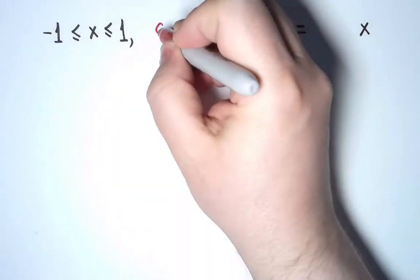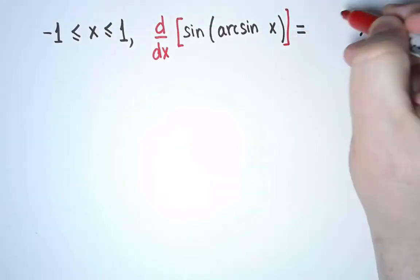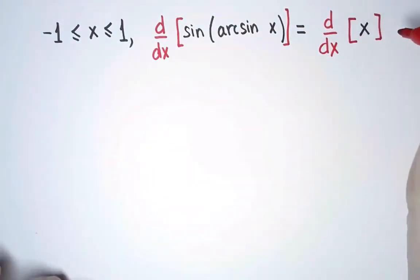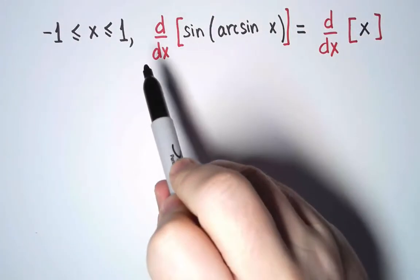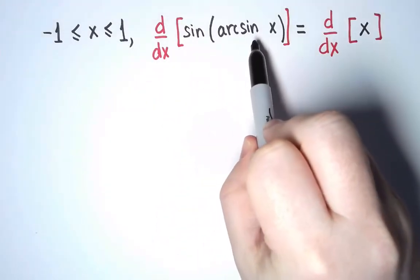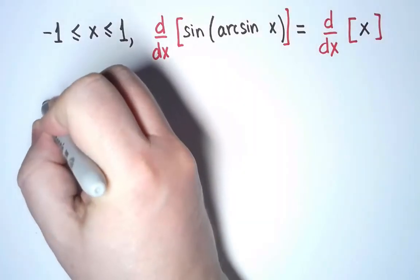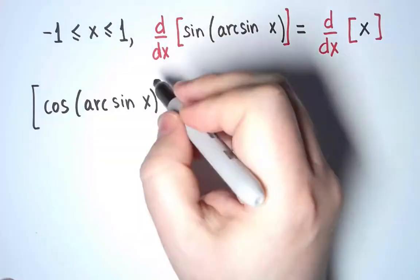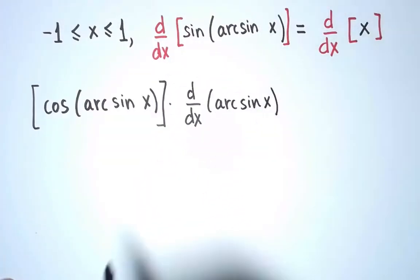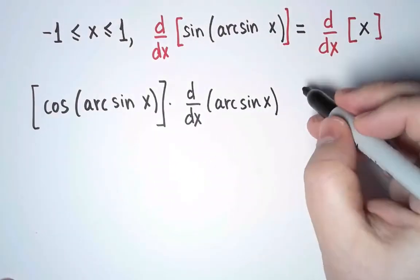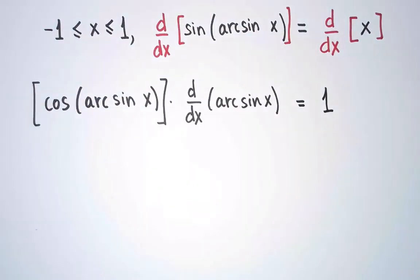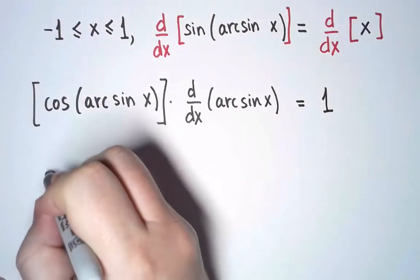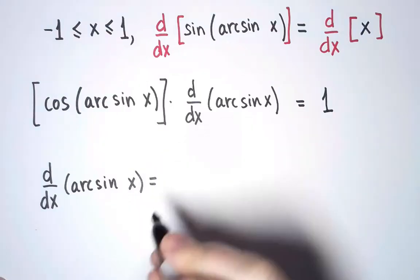Let's do it, then. The derivative of the left should be equal to the derivative of the right. On the left, I have the derivative of sine of a function. Using the chain rule, that is cosine of the argument times the derivative of the argument. And on the right, I get 1. From here, I can solve, and the derivative of arcsine is 1 over cosine of arcsine.